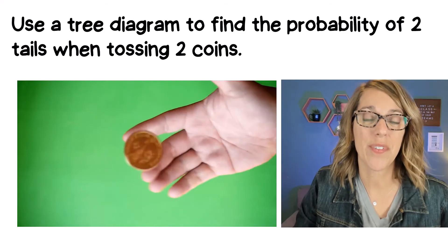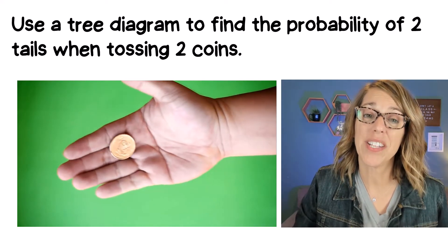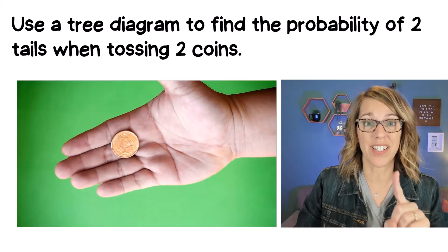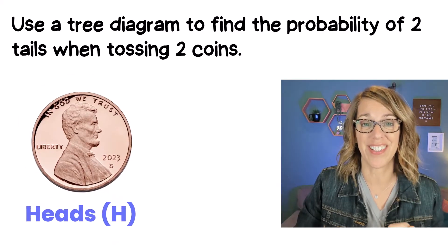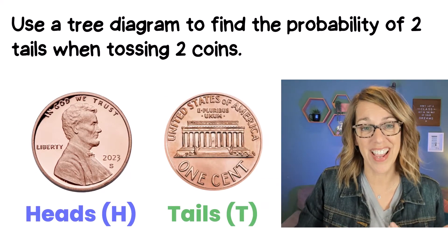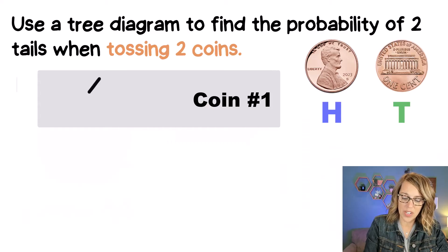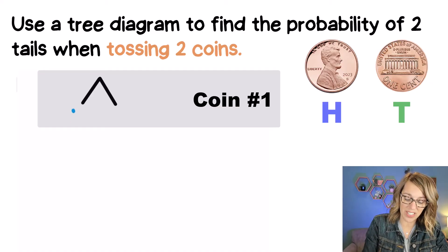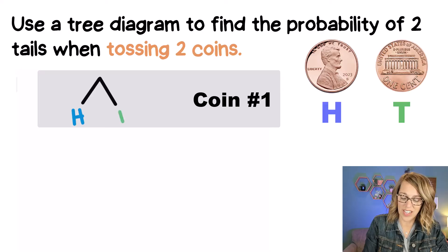When we create a tree diagram for flipping two coins, we want to start with the two possible outcomes for a single coin toss, and those are either heads or tails. Here comes our tree diagram. That very first branching is going to represent tossing the first coin, and I know that first coin can land on either heads or tails.